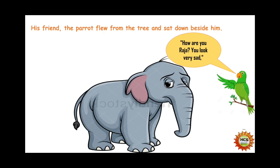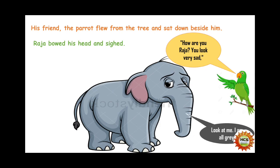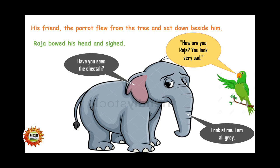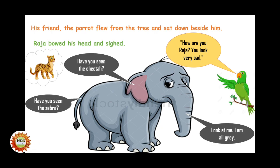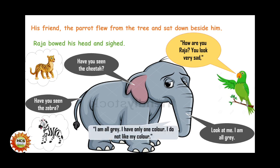The parrot asked Raja, 'How are you? You look very sad.' Raja bowed his head and sighed. He replied, 'Look at me, I'm all grey. Have you seen the cheetah? It has brown colour and black spots. Have you seen the zebra? It has black stripes. And I'm all grey — I have only one colour. I do not like my colour.' This is the reason why Raja was sad.